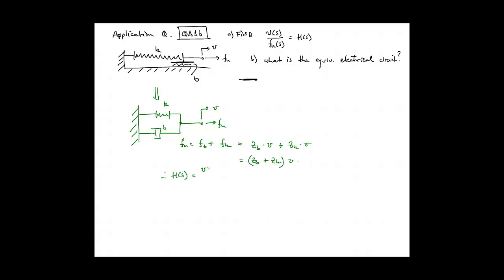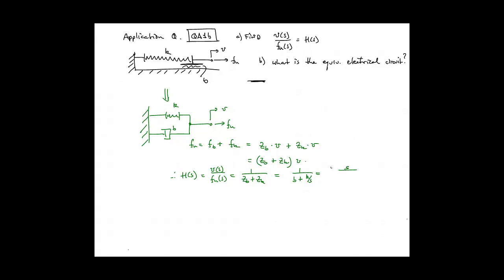We then solve for the transfer function, that is the velocity divided by the external force F sub U, which gives us one over the sum of the impedances. We substitute in B and K over S. We multiply through the top and the bottom by S over K. And that gives us our final result, which is S over K divided by 1 plus S over omega P.